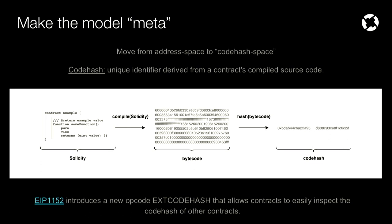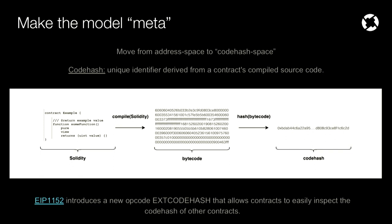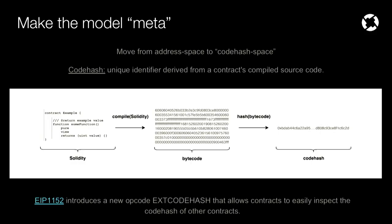So how do we make our model meta? We move from the address space of the local shard or blockchain to what I'm calling code hash space. The code hash is a unique identifier derived from a contract's compiled source code. You write some Solidity source code, compile it to get bytecode — a blob of data describing how the contract functions within the EVM — and then you hash that bytecode to get a 32-byte hash called the code hash. If we take the same exact contract, deploy it on a bunch of different shards or blockchains using the same compiler and the same hashing function, it will have the same exact code hash on every single shard or blockchain.